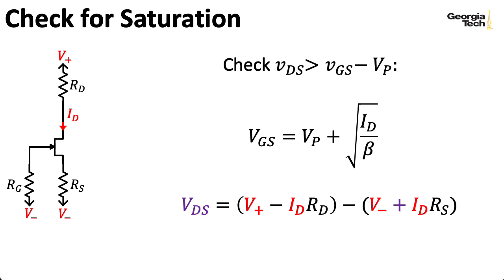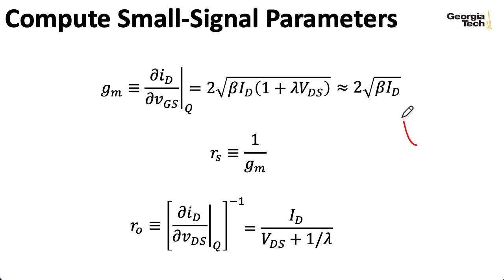Now, assuming everything checks out, you can plug ID into these expressions here in order to get our intrinsic transconductance gm and our intrinsic output resistance R0. You may also want to compute things in terms of the intrinsic source resistance rs, which is 1 over gm.